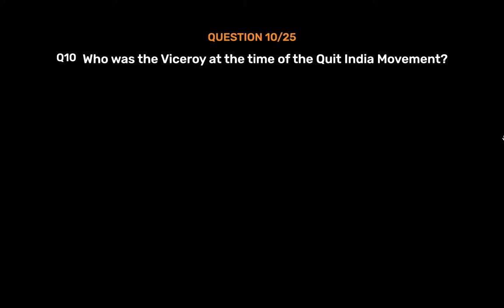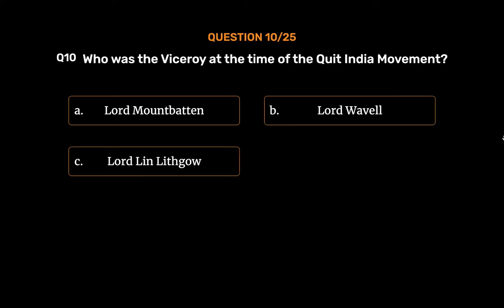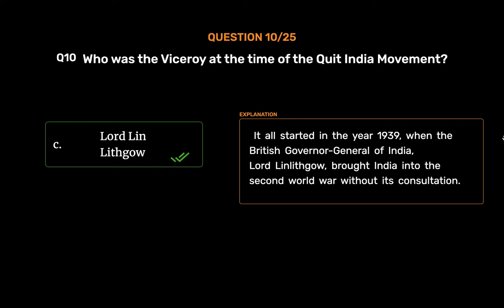Question No. 10. Who was the Viceroy at the time of the Quit India Movement? Option A. Lord Mountbatten. Option B. Lord Wavell. Option C. Lord Linlithgow. Option D. Lord Irwin. The correct answer is Option C, Lord Linlithgow. It all started in the year 1939, when the British Governor General of India, Lord Linlithgow, brought India into the Second World War without its consultation.